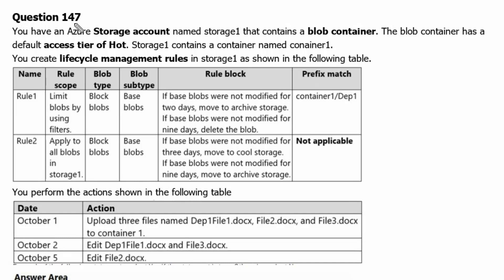Question 147. You have an Azure storage account named storage1 that contains a blob container. The blob container has a default access tier of hot. Storage1 contains a container named container1. You create lifecycle management rules in storage1 as shown in the following text.